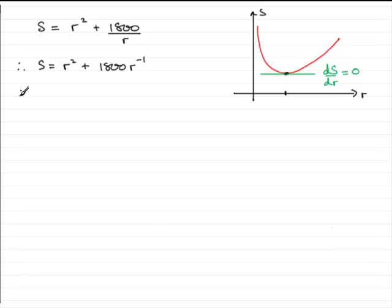Now in the usual way we should be able to differentiate this. Differentiate S with respect to r. So dS/dr equals - for terms like this, multiply the power by the number at the front. We've got a 1 here. So 2 times 1 is 2. Reduce the power by 1 and you get r to the power of 1, or you could just leave it as 2r.